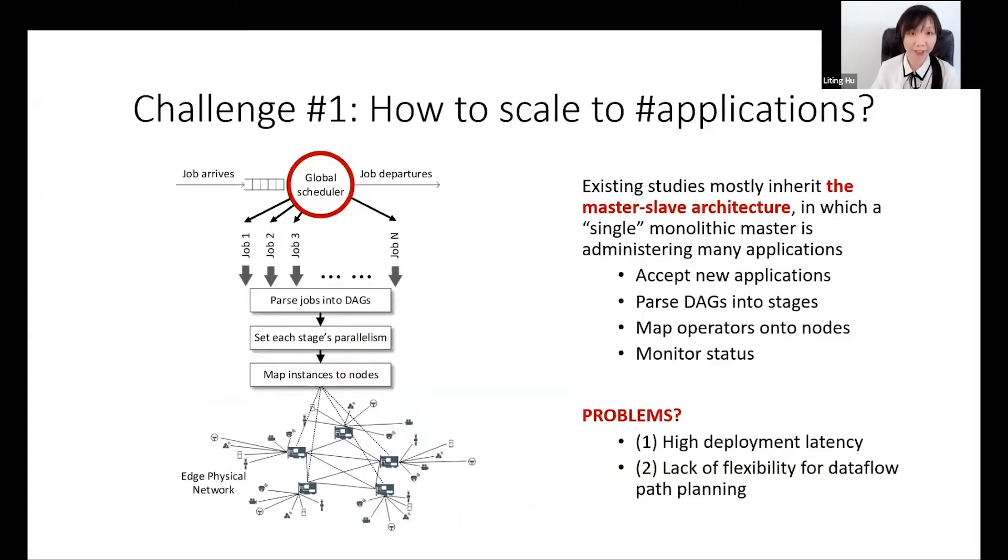However, we are facing significant challenges to achieve these goals. The first challenge to build this edge stream processing engine is how to scale to a large number of concurrent running IoT stream applications. However, existing studies such as Storm, Flink, and Spark mostly inherit the centralized master-slave architecture.